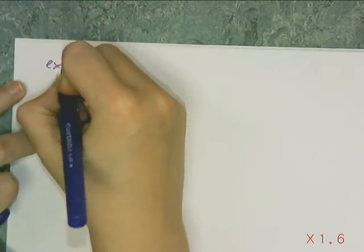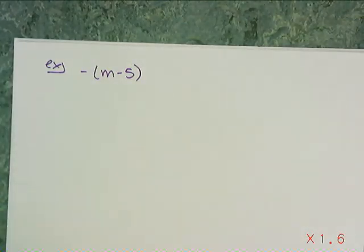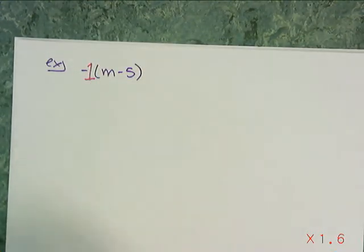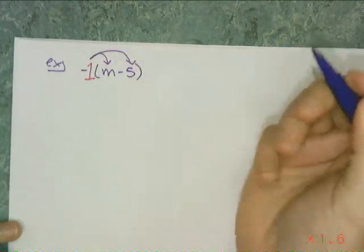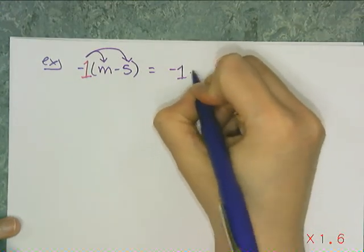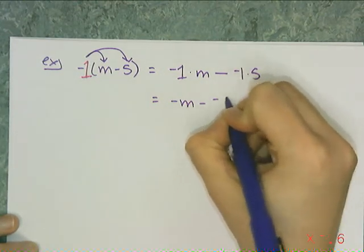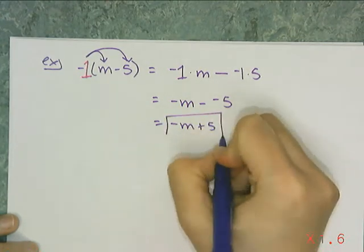Here's something people mess up: it looks like I'm not distributing anything at all, but remember a mathematician won't write a 1 where they don't have to. So a lone negative sign is really negative 1 — this is indeed a distribution problem. I multiply negative 1 times m and negative 1 times 5, carrying the subtraction through. I get negative m minus negative 5, then simplify the signs to get negative m plus 5.